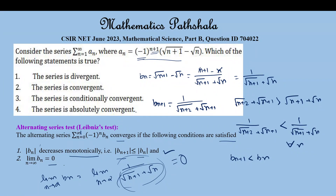So option 2 is also satisfied. Therefore the given series is convergent. Option 2 is right and option 1 is false.